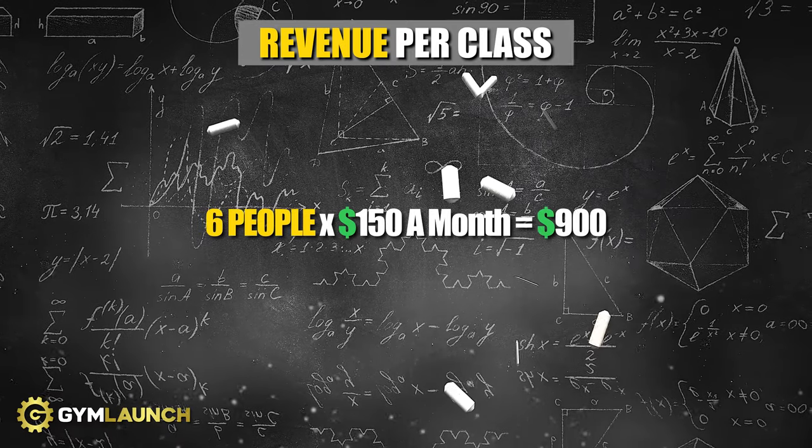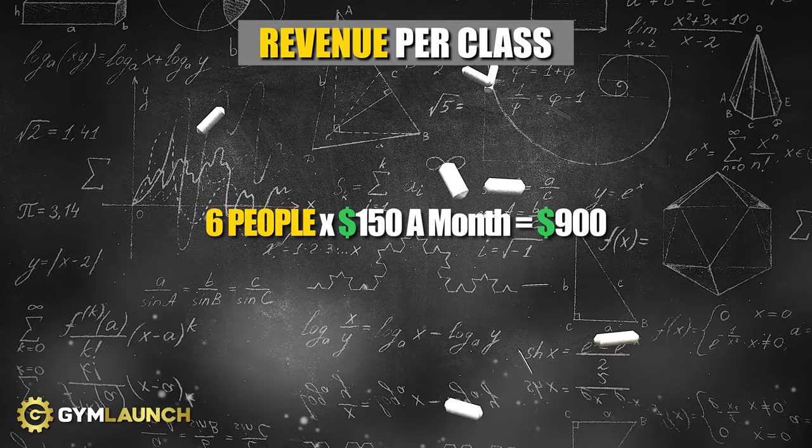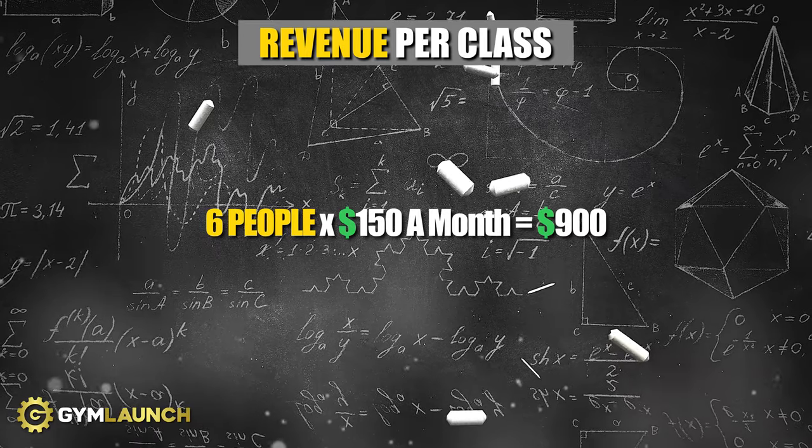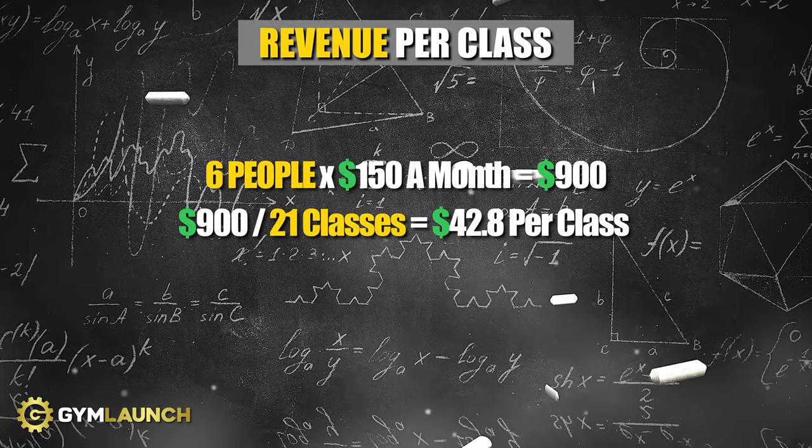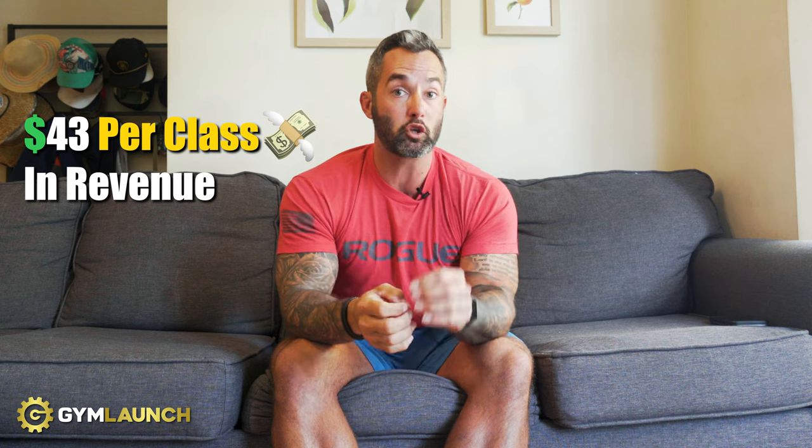Next, figure out how much revenue you're collecting from those six people on a monthly basis. Six people times $150 equals $900 in monthly revenue for that class. Then take $900 divided by 21 classes, which comes out to roughly $43 per class. So your revenue — not profit — for that class is $43 per class.